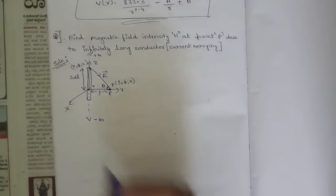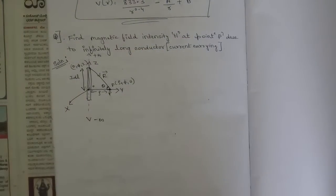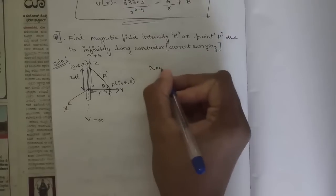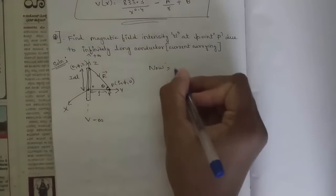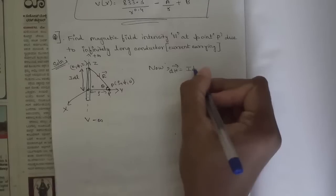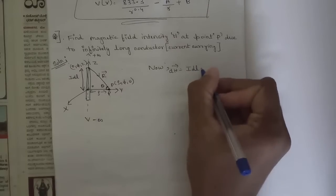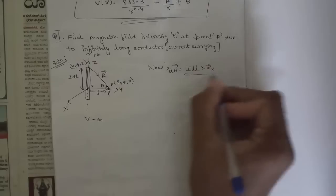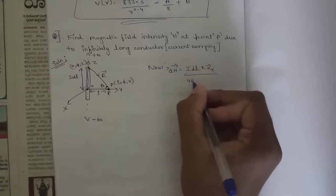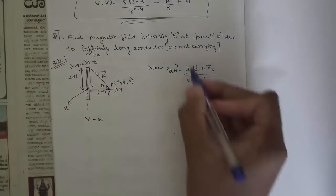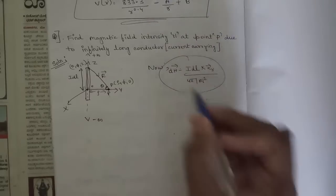Since it is a current carrying conductor, we consider the I component as well. Now we need to apply the Biot-Savart law condition. The formula is: dH = I dL cross aR vector, divided by 4π times the magnitude of R squared.